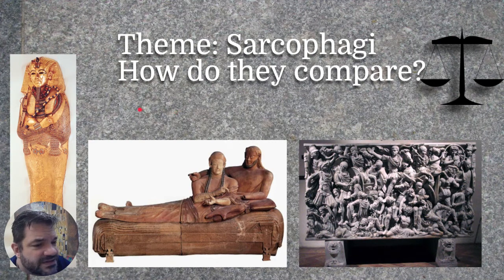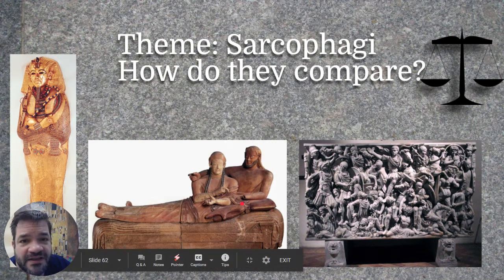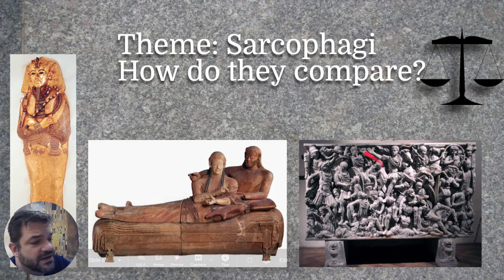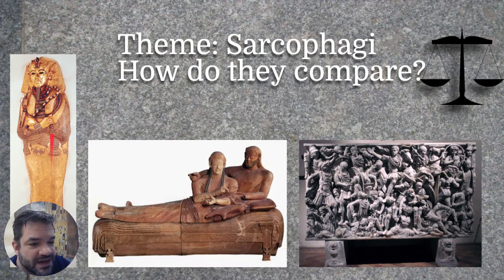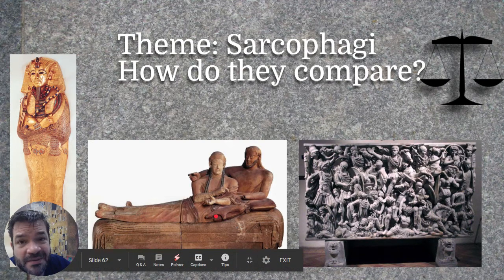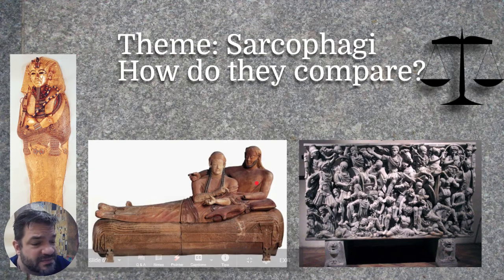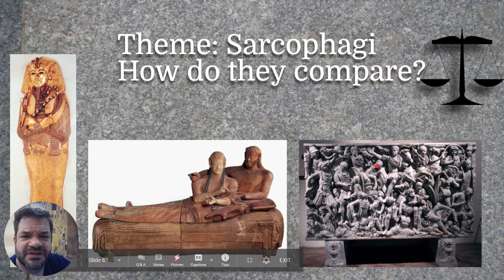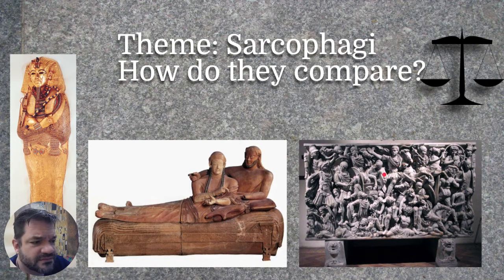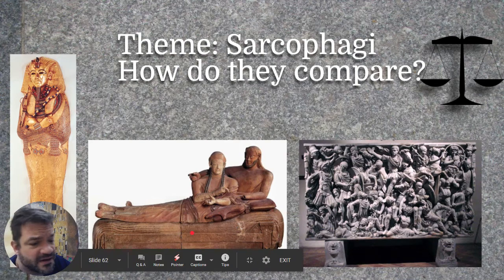How does the Ludovisi Battle Sarcophagus compare to the other sarcophagi that we've seen? It does retain its boxy, rectangular shape, whereas Tutankhamun's is going to be more anthropomorphic, as is the Etruscan Sarcophagus of the Spouses. In terms of material: the Egyptian used rich gold, the Etruscans used more common terracotta, and this one uses expensive marble — in between.